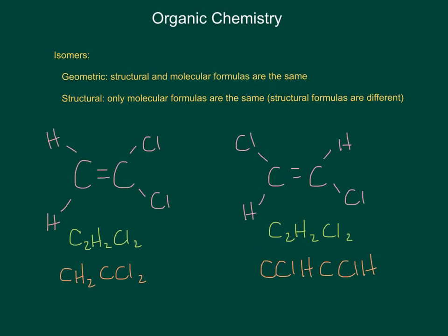In order to make the left compound look like the right compound, I actually had to break bonds. On the left compound, the left carbon was bonded to two hydrogens, but on the right compound, the left carbon is bonded to a chlorine and a hydrogen. So I had to break one hydrogen bond and replace it with a chlorine, breaking that chlorine's bond from the other carbon and swapping a hydrogen over. There is no way to shift, twist, or flip the geometry of this compound to match the other — which is why both of these are structural isomers.